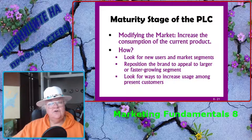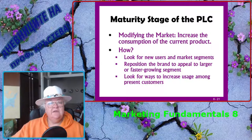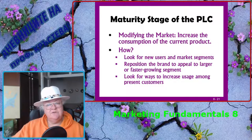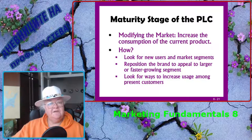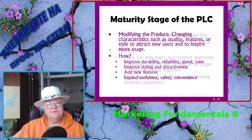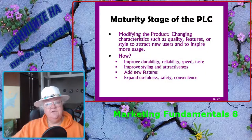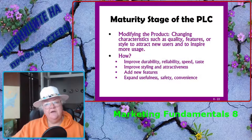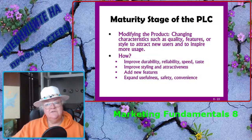The maturity stage means you need to modify the market: increase the consumption of the current product, look for new users and market segments, reposition the brand to appeal to larger or faster-growing segments, and look for ways to increase usage among present customers. Modifying the product means changing characteristics such as quality, features, or style to attract new users and inspire more usage — improving durability, reliability, speed, and taste, improving styling and attractiveness, or adding new features to expand usefulness, safety, and convenience.